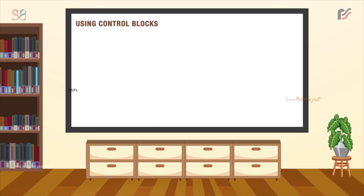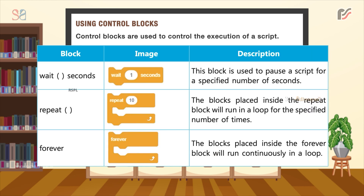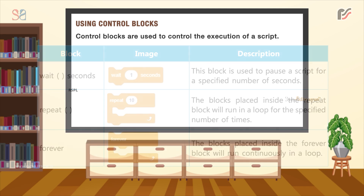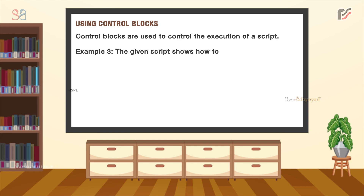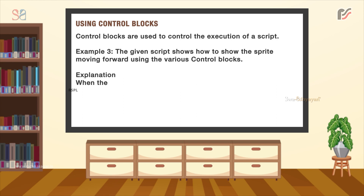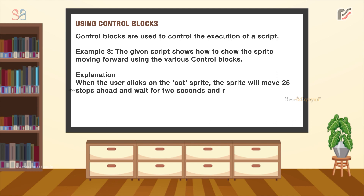Next, using Control blocks. Control blocks are used to control the execution of a script. The Wait seconds block is used to pause a script for a specified number of seconds. For the Repeat block, the blocks placed inside it will run in a loop for the specified number of times. An example: the given script shows how to show the sprite moving forward using various control blocks. When the user clicks on the cat sprite, the sprite will move 25 steps ahead, wait for 2 seconds, and repeat the same step one more time.